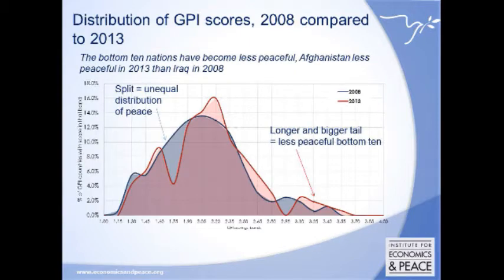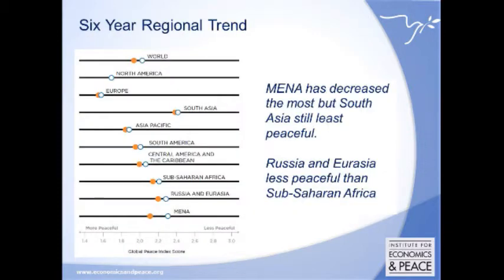When we look at the distribution of GPI scores, we see a key trend: peace is becoming more unequal. The countries at the bottom — the bottom 15 to 20 — are now separated from the rest of the distribution. In 2008 it was a more even distribution; now the bottom 10 are really separated, and countries like Afghanistan and Iraq are less peaceful than they were in 2008. Regionally, the Middle East and North Africa has decreased the most, mostly due to the Arab Spring, but South Asia remains the least peaceful region overall.